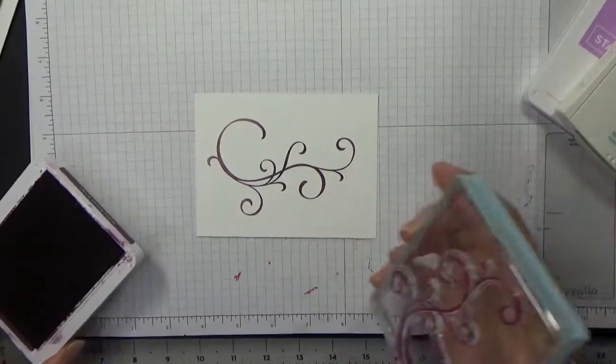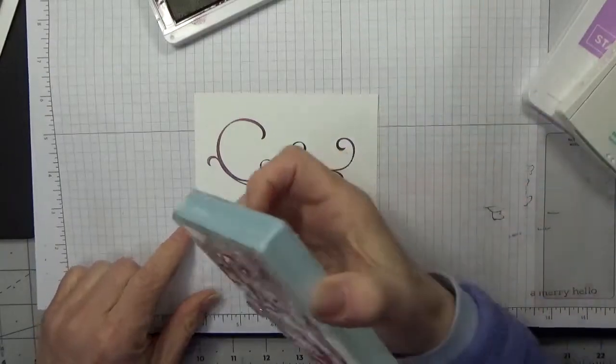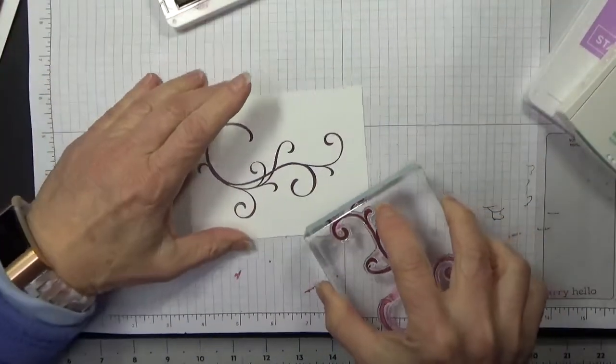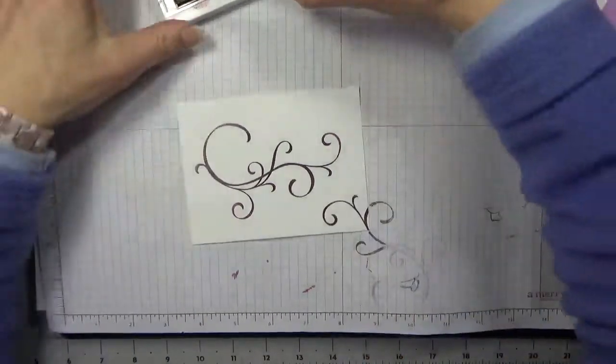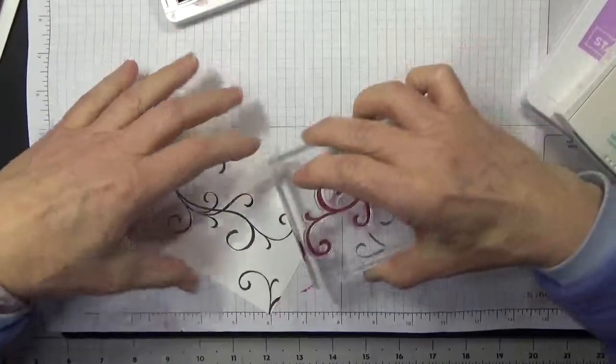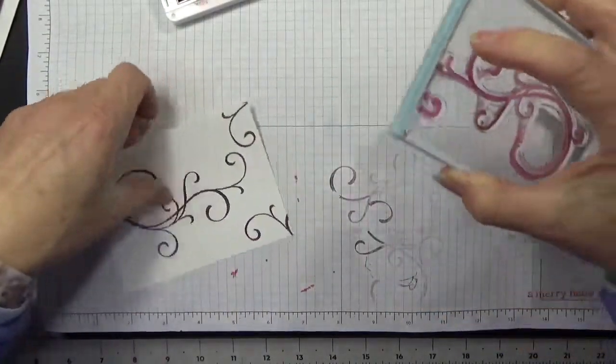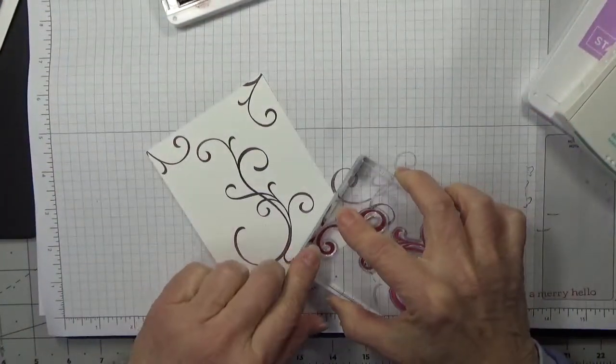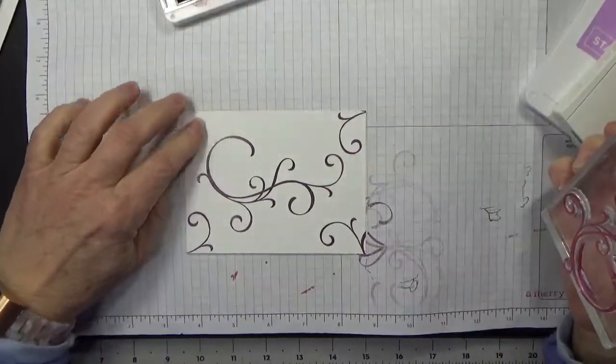Now I want to do just three corners. I'm going to put a swirl down here, a swirl up here, and a swirl down here, and I'm going to leave this corner empty.